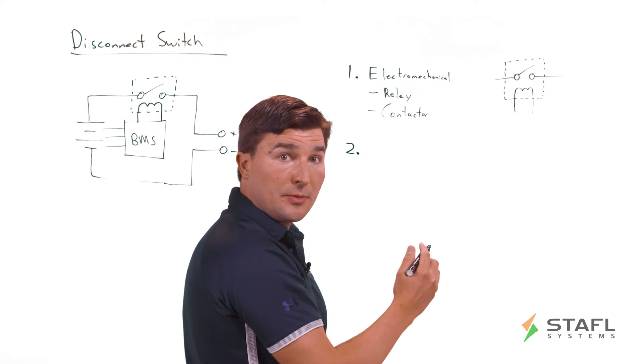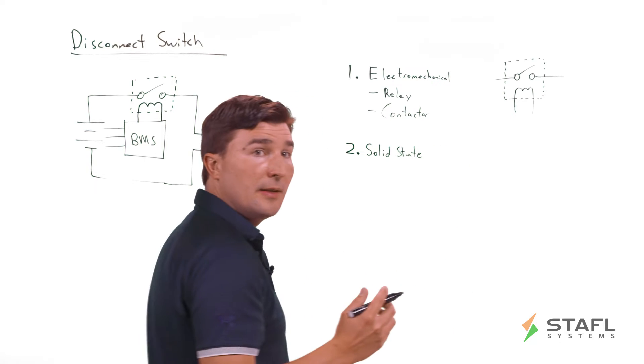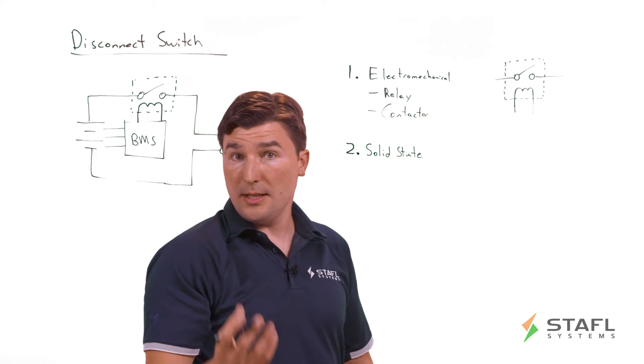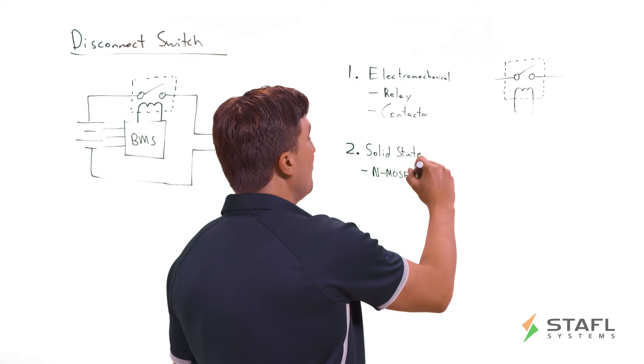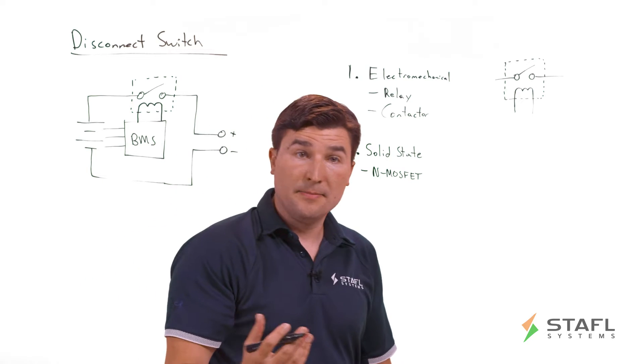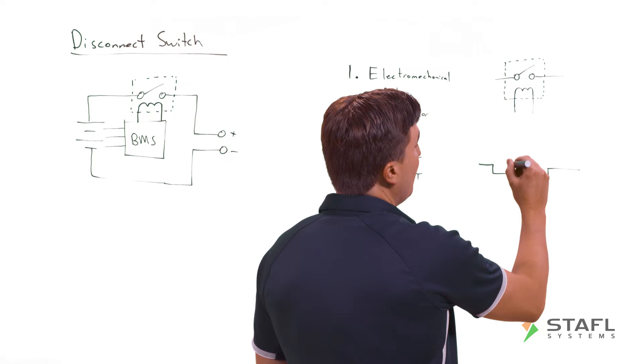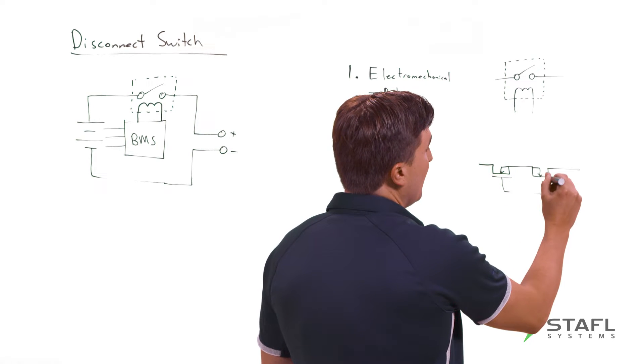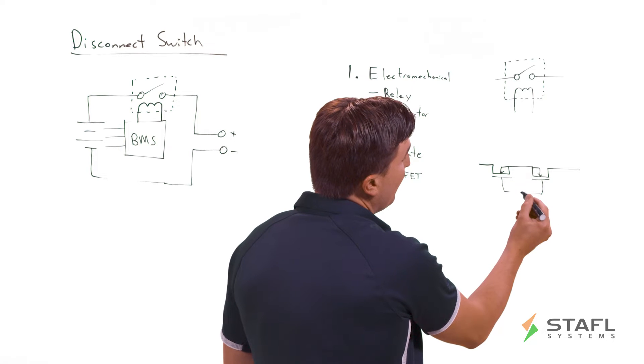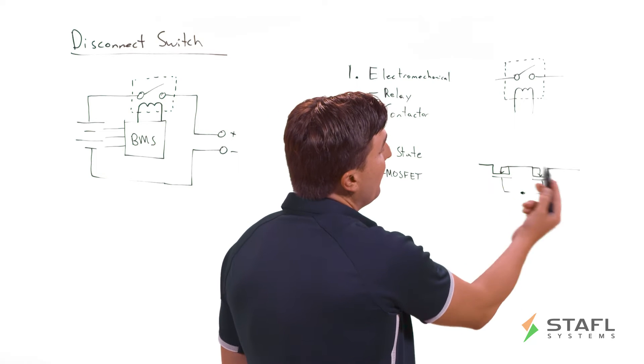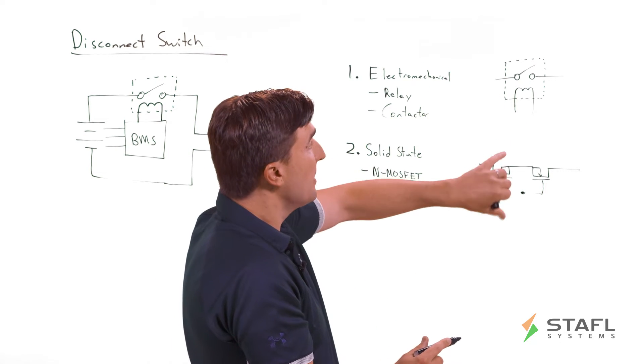The BMS controls it via this coil drive line. The other method of achieving a disconnect switch is what's called solid state. As its name suggests, this means that there's no moving parts and it's done completely in semiconductors. Generally speaking, this is done with N MOSFETs, which are transistors that have low resistance. There are some important differences between how these systems operate.